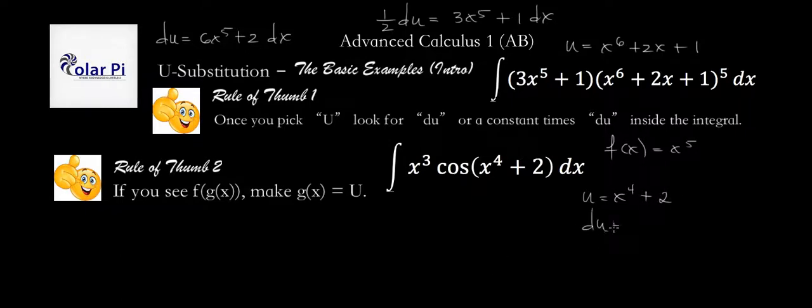Because du would be just like before, 4x cubed dx. By before, I mean when we just picked x to the fourth alone to be u. Du is the same because the derivative of the constant is 0. And so then we see that we've got confirmation. x cubed is here, dx is there. Again, we're missing the 4, but we're not bothered.